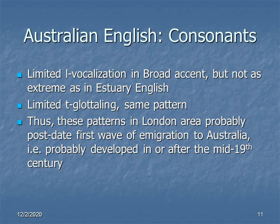What this suggests is that these patterns — L-vocalization and T-glottaling — are of relatively recent origin, probably mid-19th century or later. That is, while many common elements of Cockney or Estuary English are carried over to Australian English pretty much whole cloth, these two elements are not, or rather, are not carried over as much. The suggestion seems to be that the original English-speaking population didn't actually speak this way, and that it was later immigrants — second and third generation immigrants — who brought those pronunciation traits over after the basic Australian accent was already established.